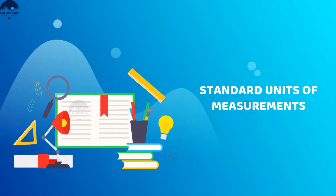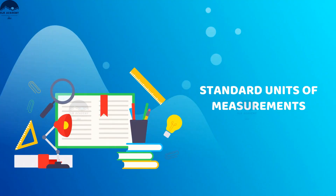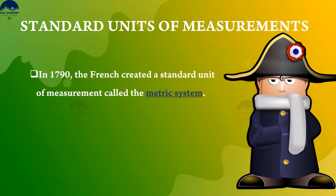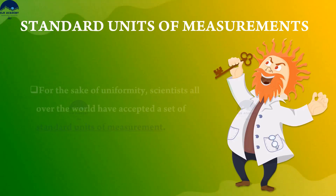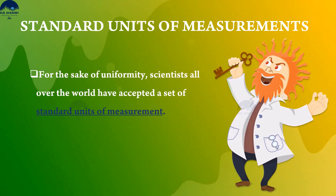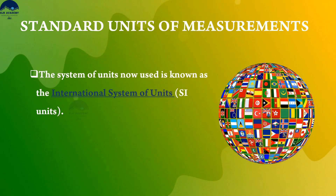Standard units of measurements: in 1790, the French created a standard unit of measurement called the metric system. For the sake of uniformity, scientists all over the world have accepted a set of standard units of measurement. The system of units now used is known as the International System of Units, or SI units.